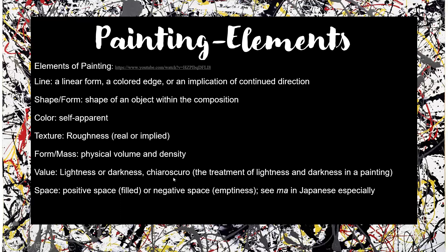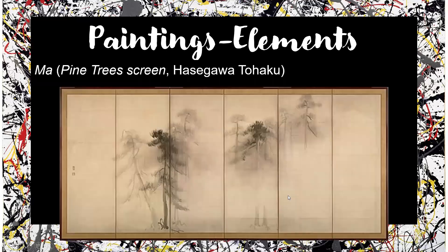Then you have value — lightness or darkness. The fancy term is chiaroscuro, which is how light and darkness show up in a painting. And then space, which is either positive space — filled — or negative space — which is empty. The term is ma in Japanese paintings, such as the Pine Tree Screen by Hasegawa Tohaku. You see here a lot of emptiness, but it creates this image, especially with the implied line of the trees going up. It makes it look like a misty mountain, possibly in the early morning. The emptiness has a beauty that accentuates what's there. These are all things you could talk about when analyzing a painting.